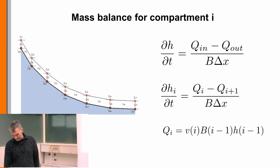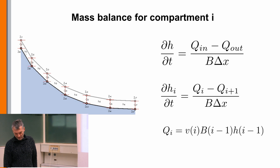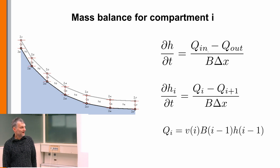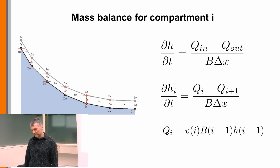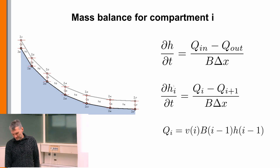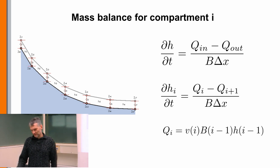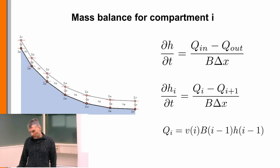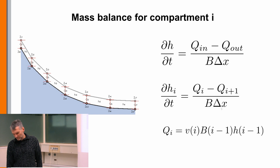We have some compartments, shown here for a typical river with something like an exponential profile. We have a first compartment, second compartment, third compartment, and so on. At the boundaries of the compartments we define the bed elevation, and then we calculate the water height in every compartment using a differential equation. The change of water height is the balance of what is coming in and going out, divided by the cross section — the width b and the length delta x of the compartment, which can vary per compartment.